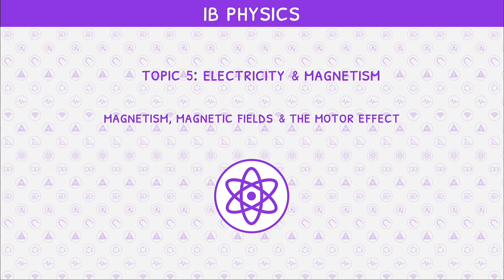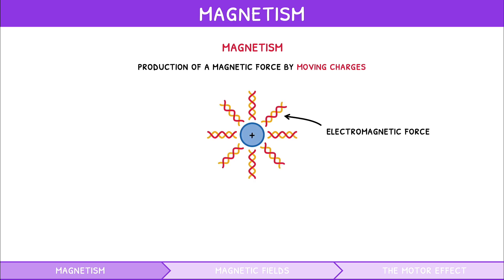We have learned in the previous IB Physics Topic 5 videos how electricity is generated and how it behaves. But how is this connected to magnetism? Magnetism is defined as the production of a magnetic force by moving charges.